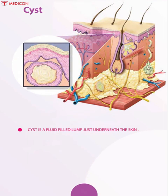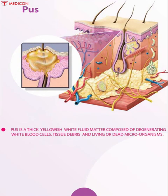Cyst is a fluid-filled lump just underneath the skin. Cysts may be due to infections, tumors, or other injuries. Pus is a thick yellowish-white fluid matter composed of degenerating white blood cells, tissue debris, and living or dead microorganisms.